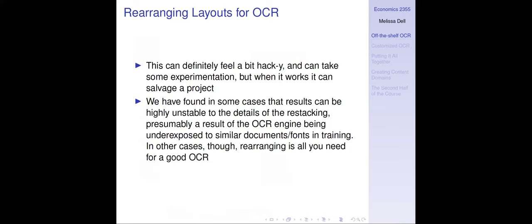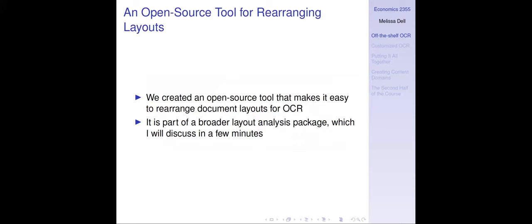This can feel a bit hacky and can take some experimentation, but when it works, it can potentially salvage a project where you weren't getting usable output. Sometimes the OCR is just going to be highly unstable to what you do, which indicates the OCR engine is underexposed to similar documents or fonts during training and may not be usable. But in other cases, rearranging is all you need for good OCR. We created an open source tool that makes it easy to rearrange document layouts for OCR, which is part of a broader package I'll talk about shortly.